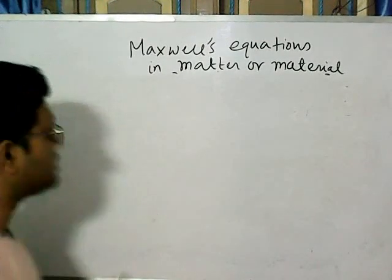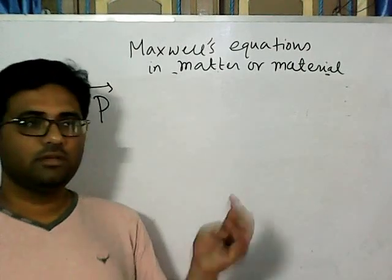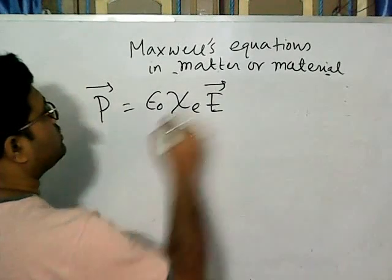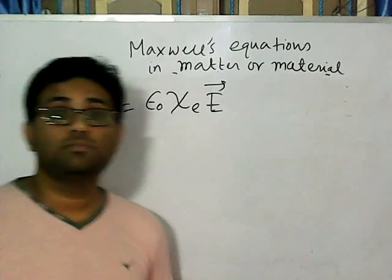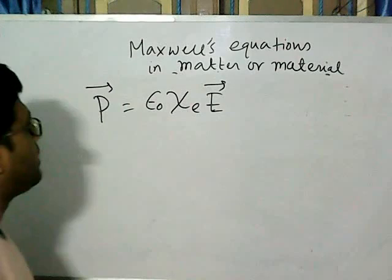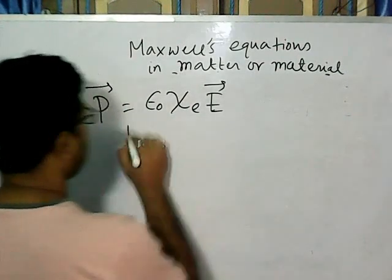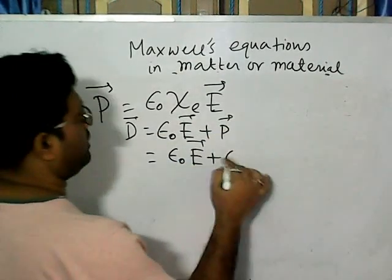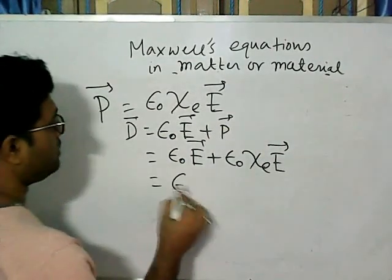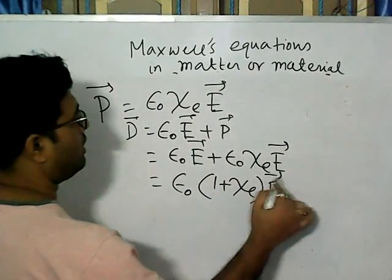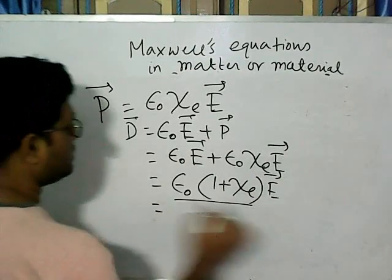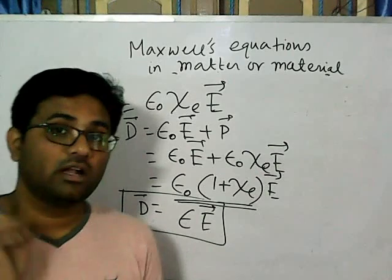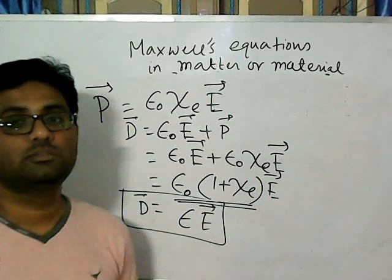For the relation between D and E: polarization P is related to electric field as P = epsilon_0 chi_E E, where chi_E is the electrical susceptibility of the dielectric material. Since D = epsilon_0 E + P, substituting gives D = epsilon_0 E + epsilon_0 chi_E E = epsilon_0 (1 + chi_E) E = epsilon E, where epsilon is the permittivity of the dielectric material, related to free-space permittivity by epsilon = epsilon_0 (1 + chi_E).